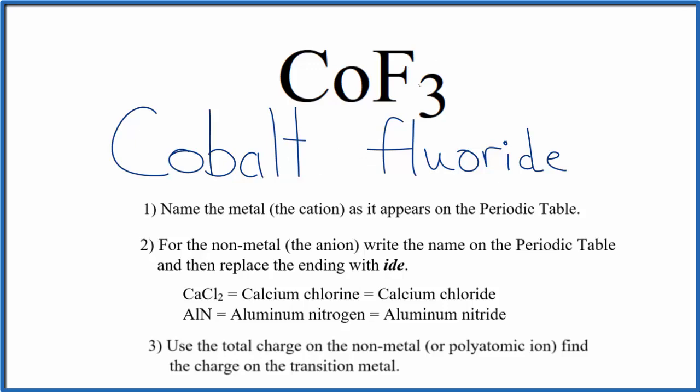We know that fluorine forms ions that are one minus, and we have three of these fluoride ions. So three times one minus, that's three minus. Cobalt has to be three plus. So we're going to write a Roman numeral three in parentheses here between the names.